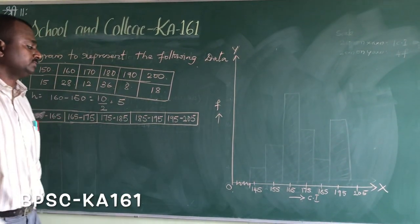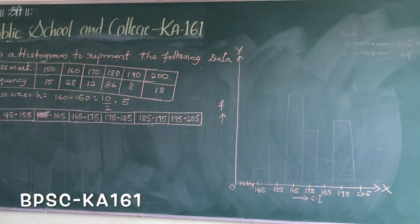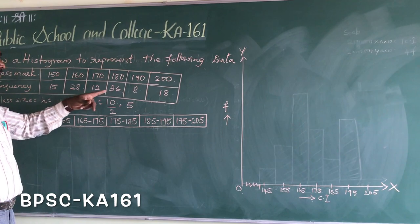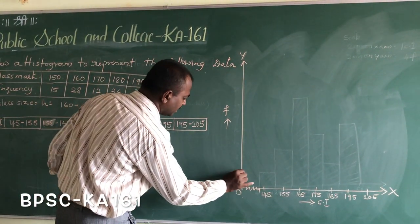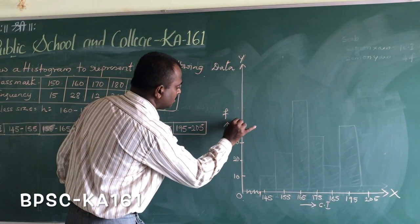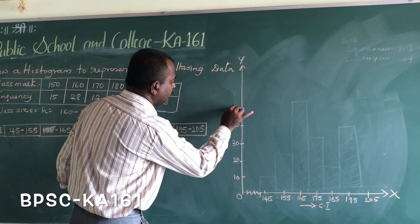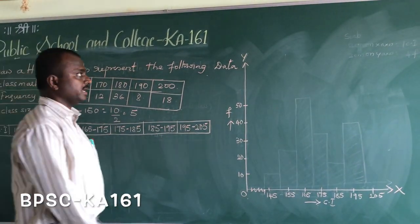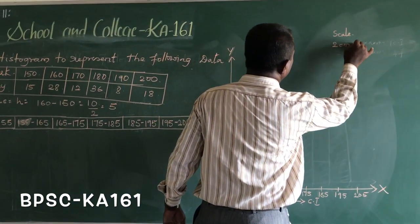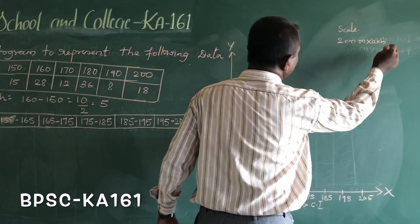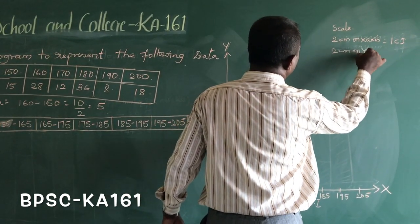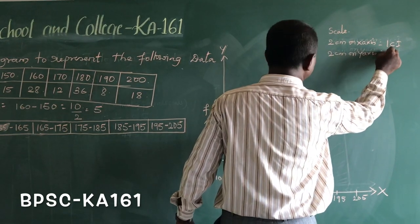Observing the frequencies, the minimum value is 8 and the maximum value is 36. Therefore on the y-axis I will mark 10, 20, 30, 40, 50. The scale is: 2 centimeters on the x-axis equals 1 class interval, and 2 centimeters on the y-axis equals 10 frequency units.